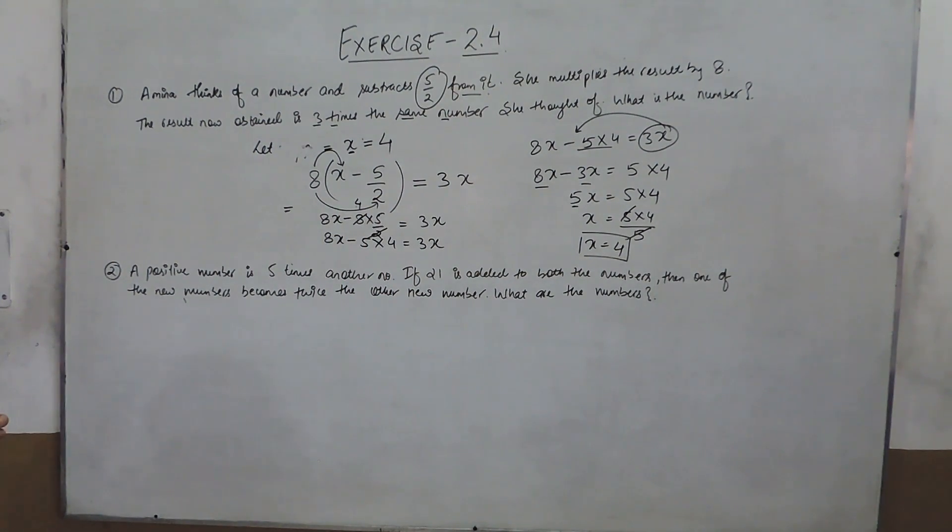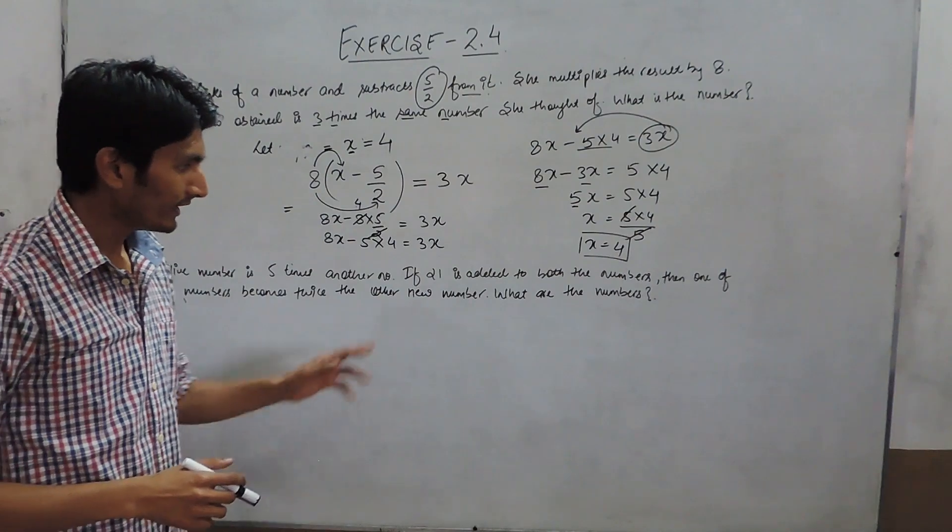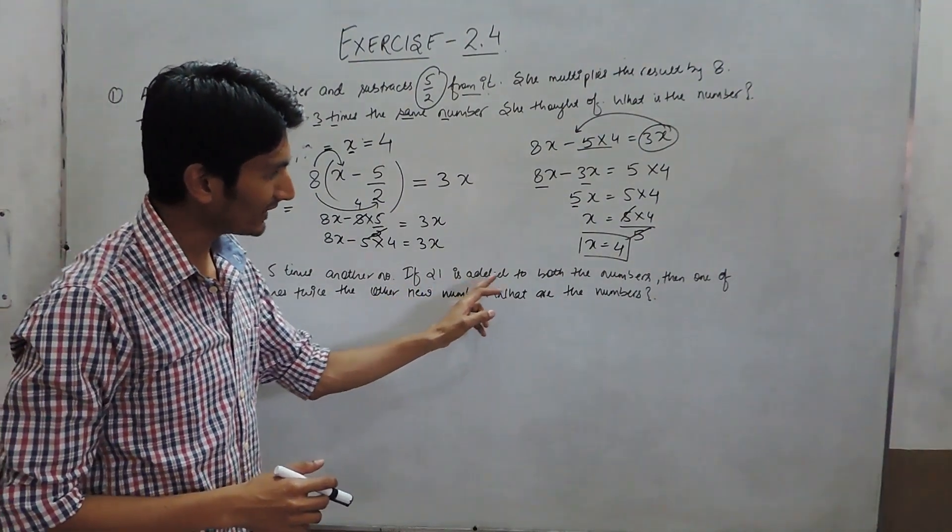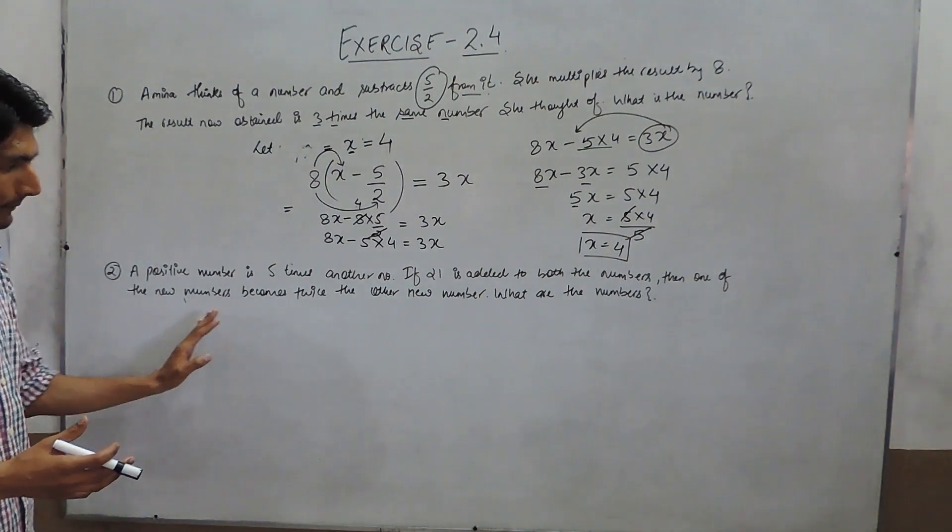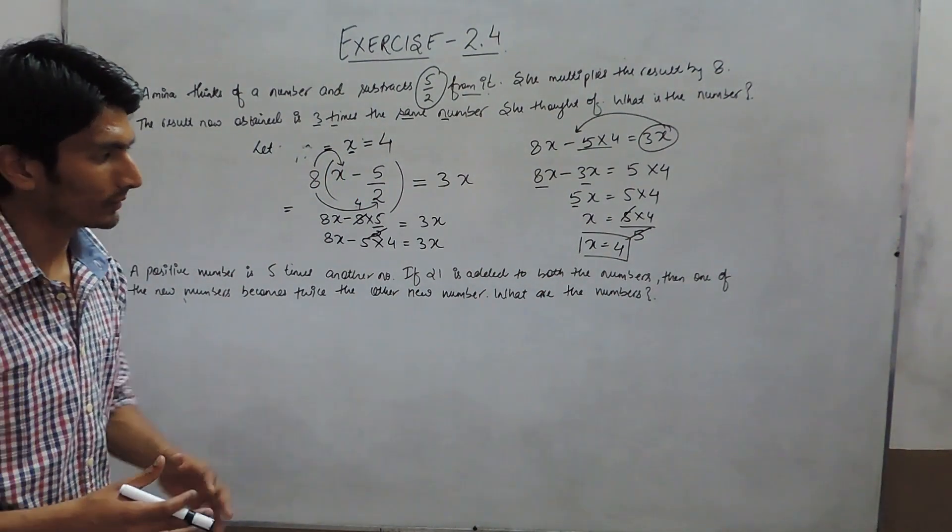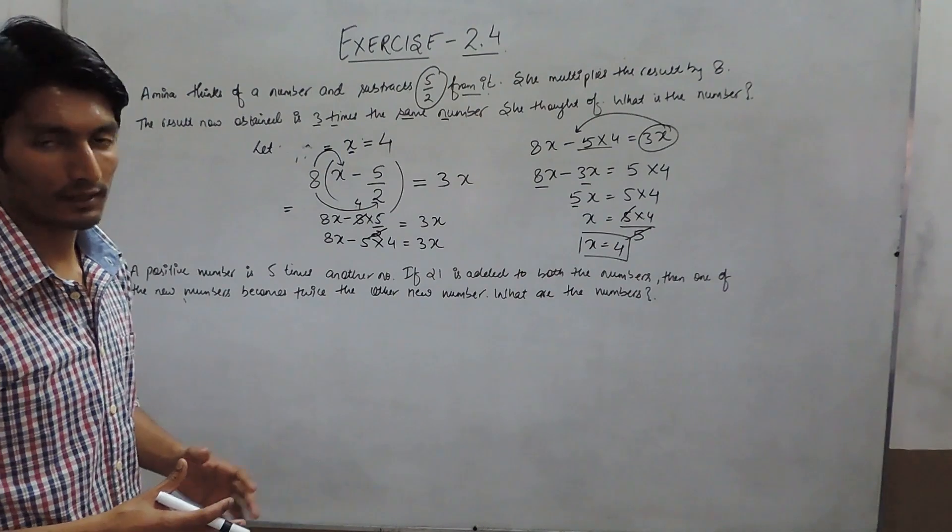In the second question, it is given that a positive number is 5 times another number. If 21 is added to both the numbers, then one of the new numbers becomes twice the other new number. What are the numbers?